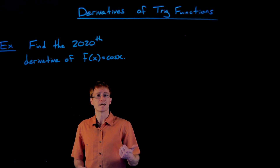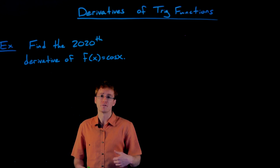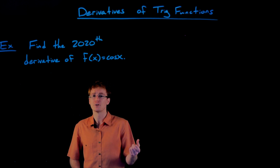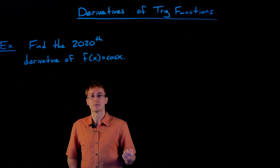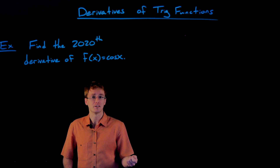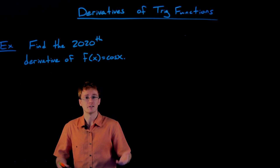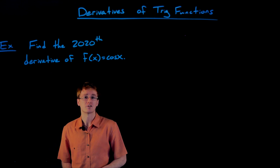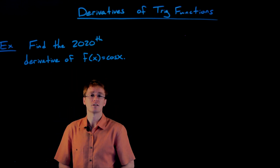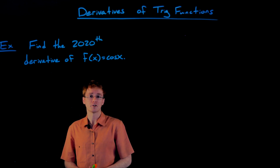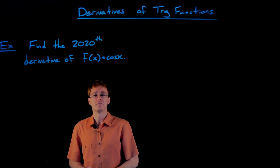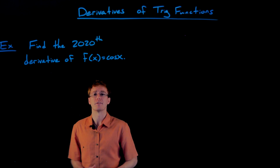Remember, the second derivative is just the derivative of the first derivative. There's also a third derivative — the derivative of the second derivative. The fourth derivative is the derivative of the third derivative, and so on. So if we want to find the 2020th derivative of our cosine function, we just have to differentiate cosine and all of its derivatives until we get there.